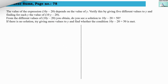Welcome to Learn Yourself. Write this — it's page number 78. The question is: the value of the expression 10y minus 20 depends on the value of y. Verify this by giving 5 different values of y and finding, for each y, the value of 10y minus 20. So first, we have to find out the values for y from this equation 10y minus 20 — we will suggest 5 different values and see what value we get for this expression.